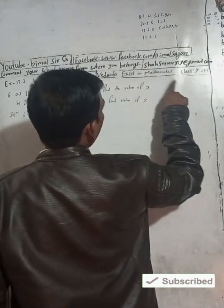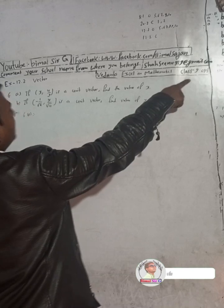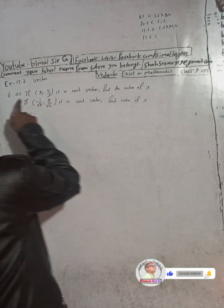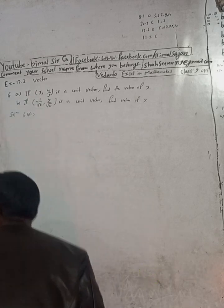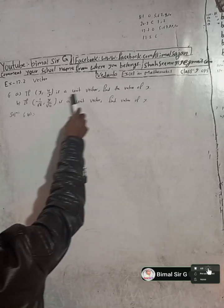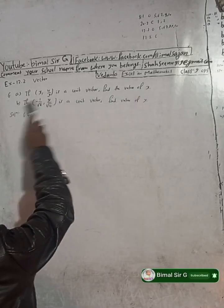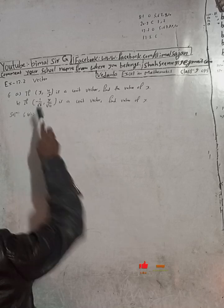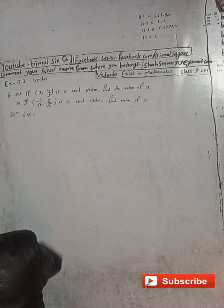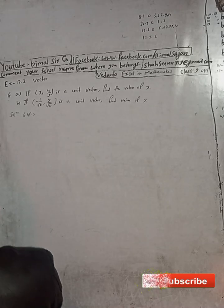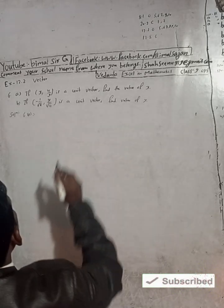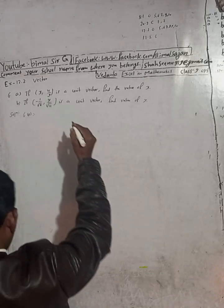The question is 6A: if (x, 4/9) is a unit vector, find the value of x. So for number A, if this is a unit vector, we write the solution now.